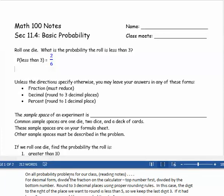On all the probability problems for our class, unless the directions specify otherwise, you may leave your answer in any of these forms: fraction form you must reduce. So if we leave this one in fraction form, we get 1 third. Or for decimal form, you need to round to three decimal places.